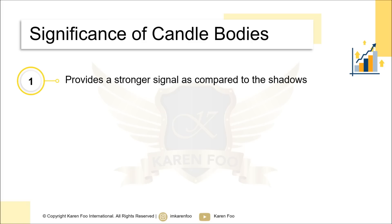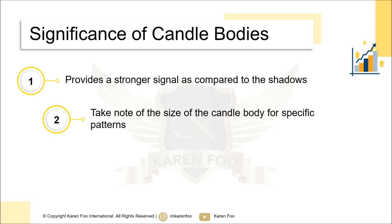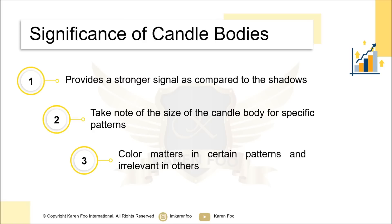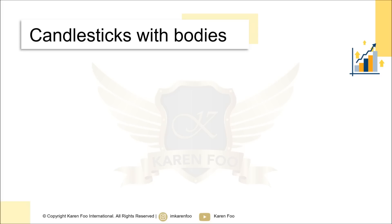When looking at candle bodies, take note of the size — but only for specific candlestick signals. For example, for a doji signal, you don't need a large body for it to be significant. Color matters in certain patterns and is irrelevant in others. Some candlestick patterns require you to note whether it's red or green; in others it doesn't matter, as long as the body size and shadow length fit the criteria.